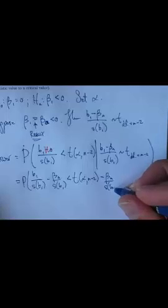So I'll take b₁ over s(b₁) and subtract β_a over s(b₁) from both sides. The left-hand side, b₁ minus β_a over s(b₁), behaves like a t distribution. So I just want to know what's the chance that this quantity, which behaves like a t random variable with n minus 2 degrees of freedom, falls to the left of this t mark minus β_a over s(b₁).